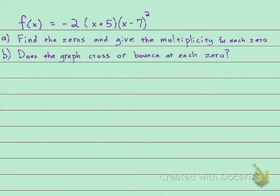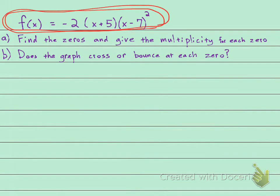Find the zeros and give the multiplicity for each zero. So they give us this polynomial function here, and thank goodness it is already factored. That makes it so much easier.